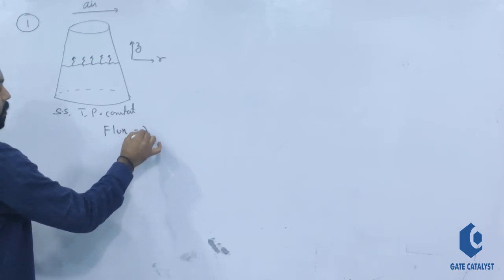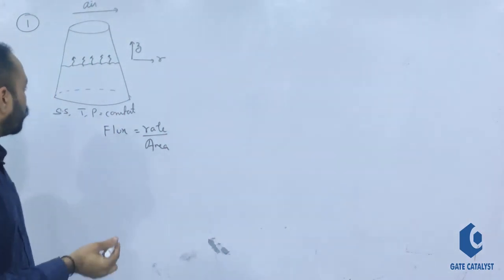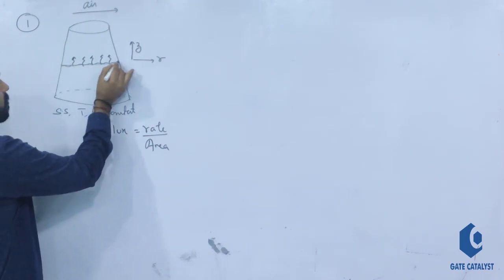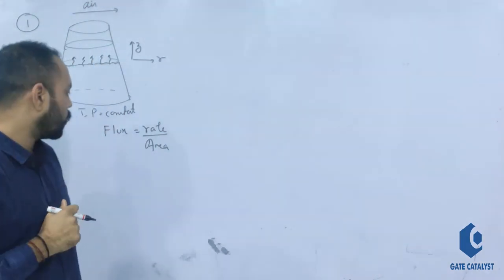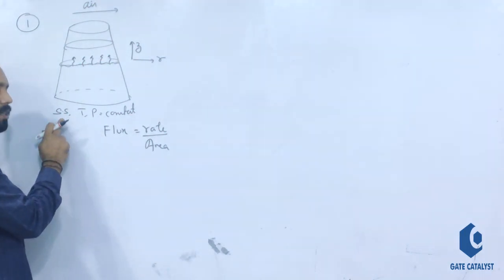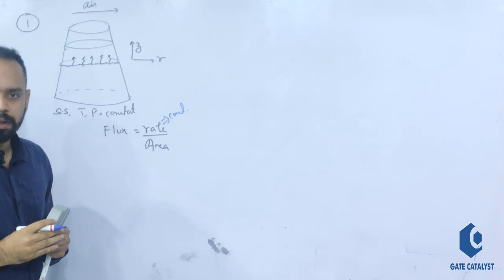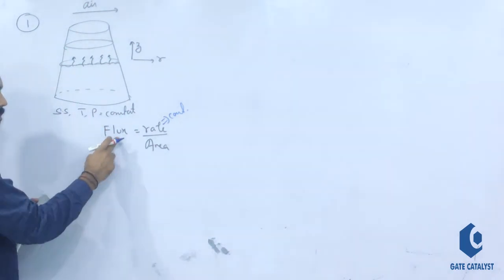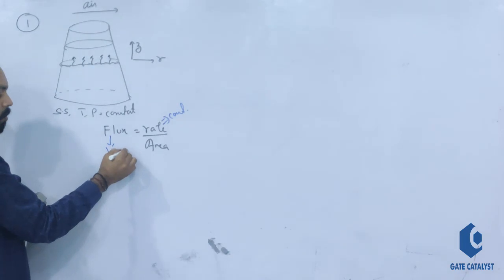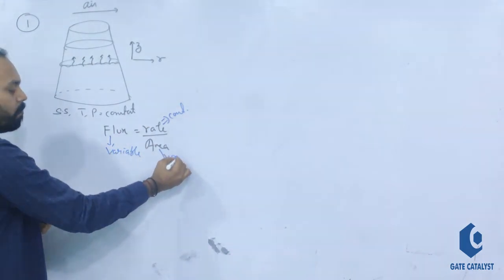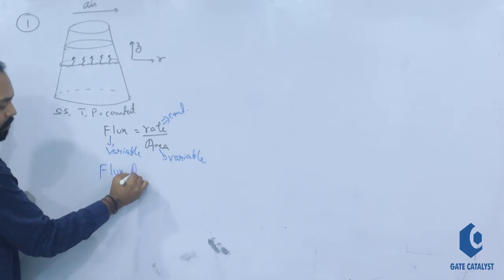Flux is defined as rate divided by area — not surface area, but the area available for diffusion. At different heights the cross-sectional area is π R². For a steady-state process, rate is constant. Since the area of diffusion is not constant, flux is variable. But flux times area must be constant.